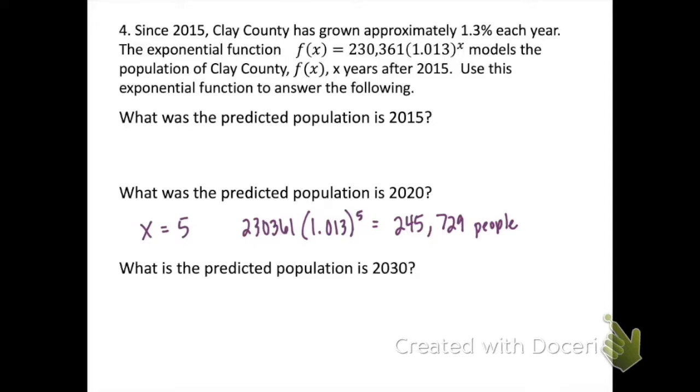And then the last one, what is the predicted population in 2030? 2030 is 15 years after 2015, so x is going to be 15. And when we plug that into our calculator, we get 279,609 people.